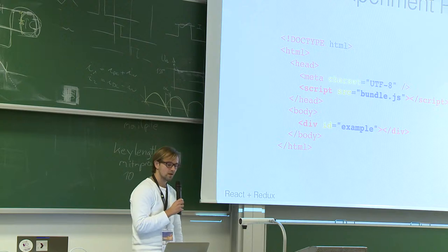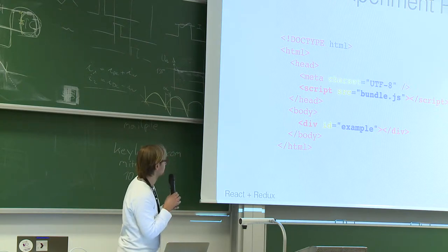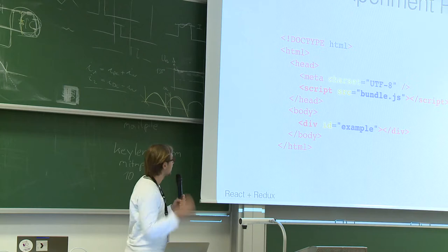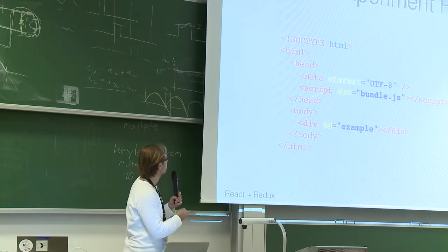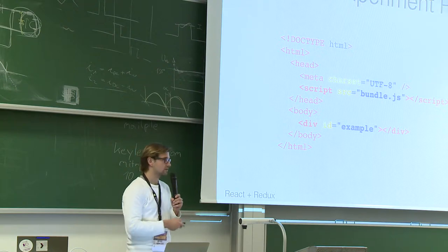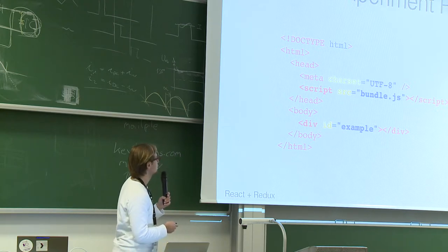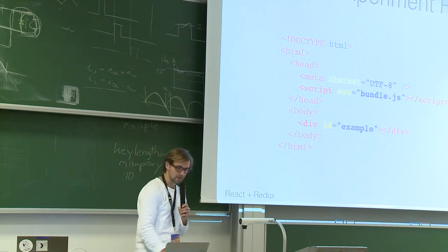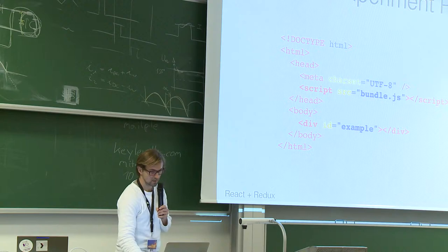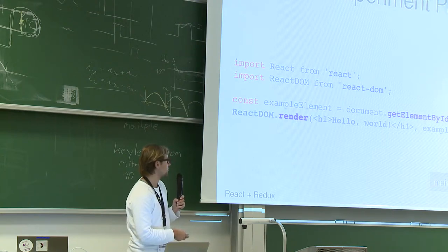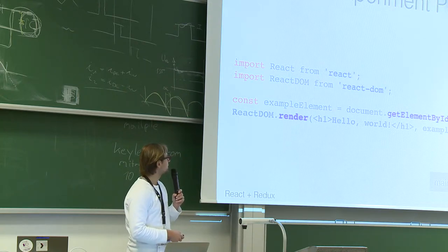Our first experiment: let's create HTML with React. We have an index.html — nothing fancy. You see a script tag for bundle.js, which is the compiled JavaScript. We also have a div with an example ID to let React know where it should render our HTML. In the JavaScript file — main.js — we have straightforward ES6 imports. We get the example element and use the ReactDOM library to render our virtual DOM, which is a headline with 'Hello World', into that element.